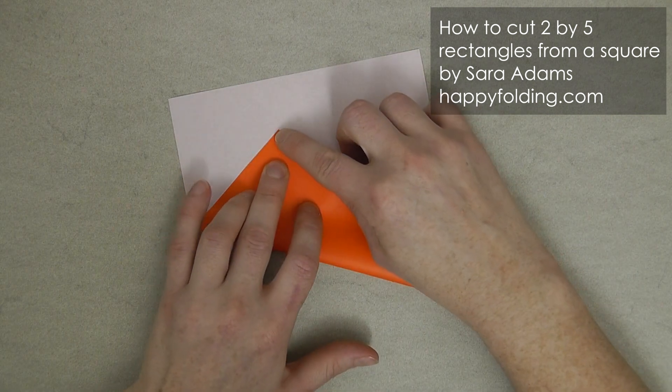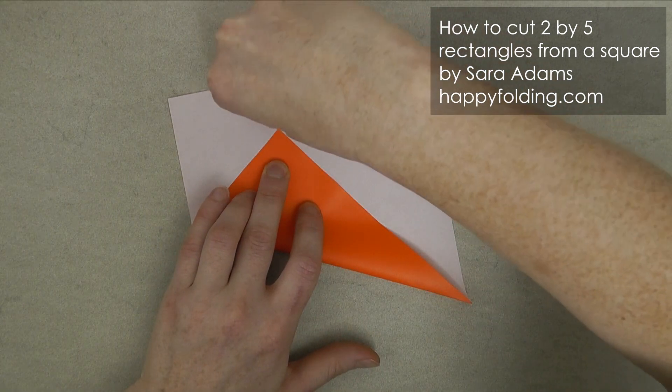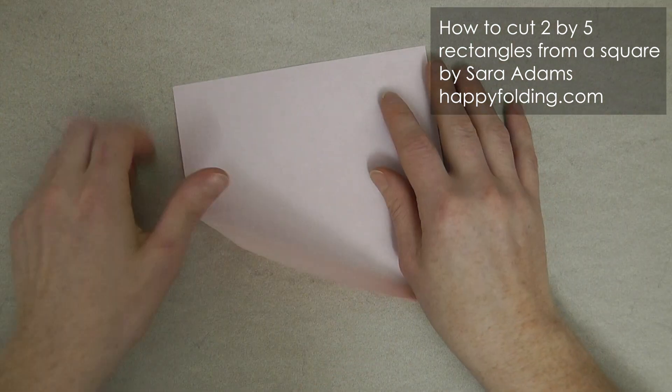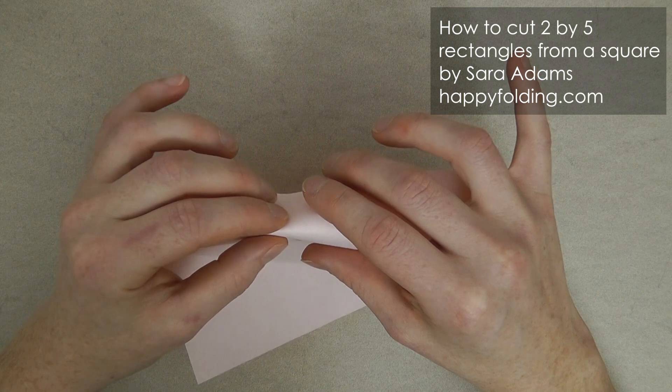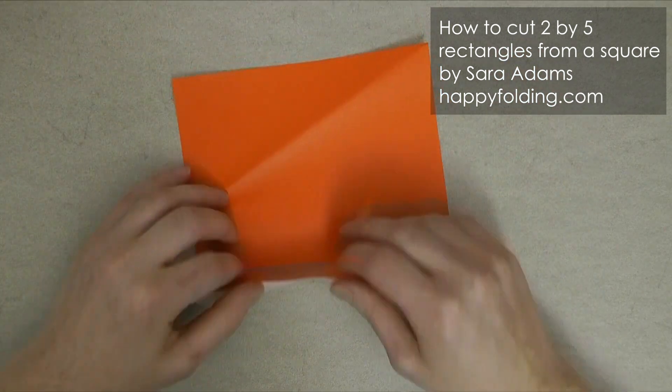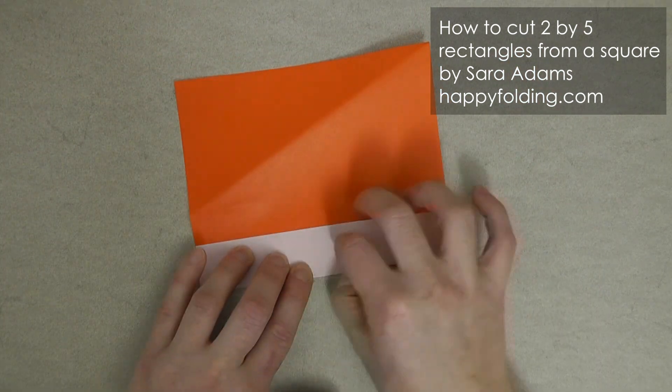Now, mark where this corner lies, for example with your thumbnail, and add a crease through that small indentation, making a horizontal crease.